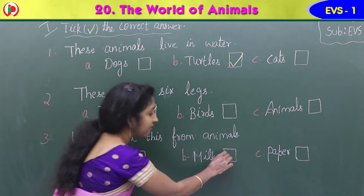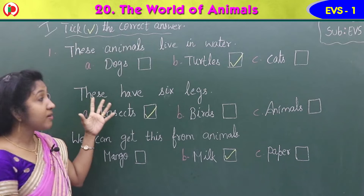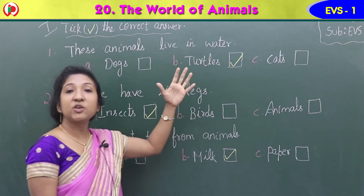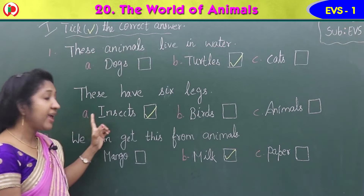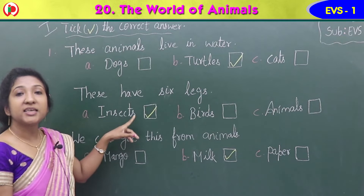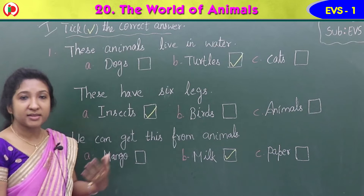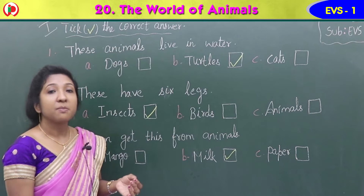Give a tick in the square box. So to summarize: first, these animals live in water — answer option B, turtles, T-U-R-T-L-E-S, also known as tortoise. Second, these have six legs — option A, insects, I-N-S-E-C-T-S. Third, we can get this from animals — option B, milk, M-I-L-K.